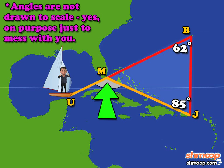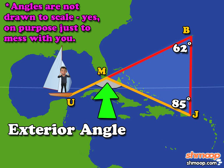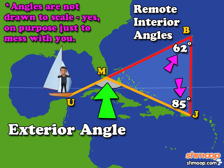The angle we're looking at is an exterior angle — an angle formed by extending one of the sides of the triangle. The two angles that are inside the triangle and opposite from the exterior angle are called remote interior angles. To find the measure of the angle, we can use the exterior angle theorem.